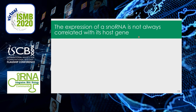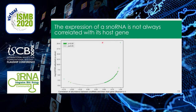Since snoRNA expression depends on transcription and splicing of the host gene, one might expect it to always be positively correlated with host gene expression. However, that is not always the case. I calculated the Pearson correlation of abundance between each snoRNA and its host gene, plotted on the x-axis, with minus the log of the adjusted p-value on the y-axis. Each dot represents one snoRNA; green dots indicate statistically significant correlation. About two-thirds of snoRNAs are positively correlated with their host gene, but surprisingly about one-third are non-correlated or even anti-correlated.